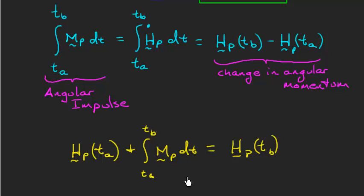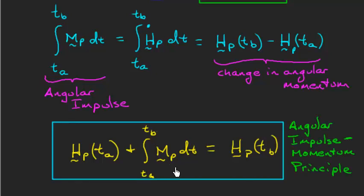Just like the linear impulse momentum principle, the new angular impulse momentum principle is a vector relationship. These angular momenta are vectors. This momentum is a vector. The time integral of the momentum, a vector. And what we have here, the final result, is the angular impulse momentum principle. And that does it.